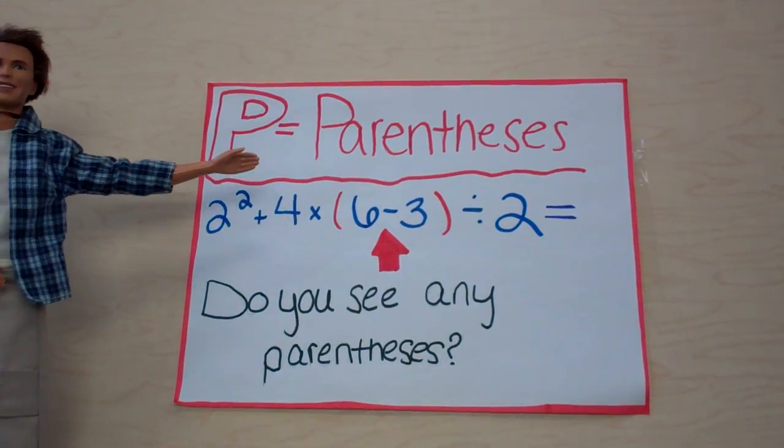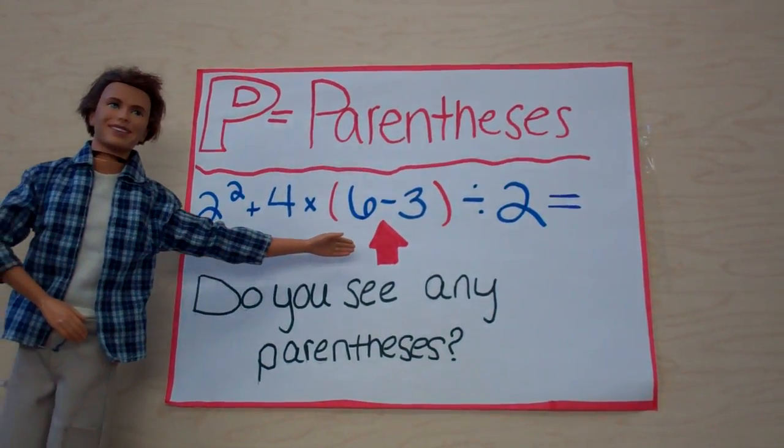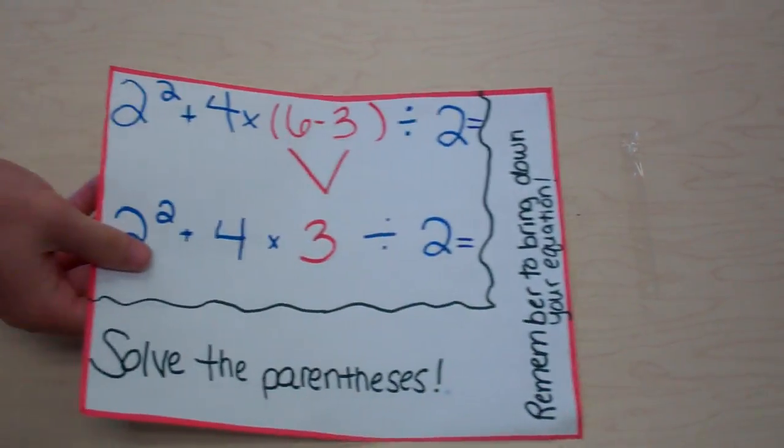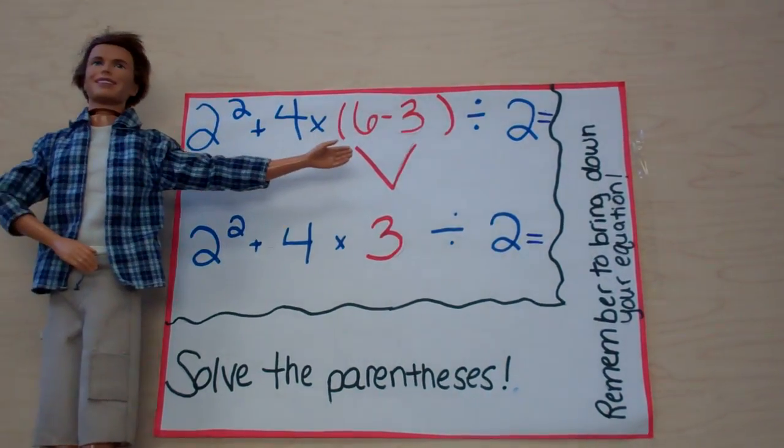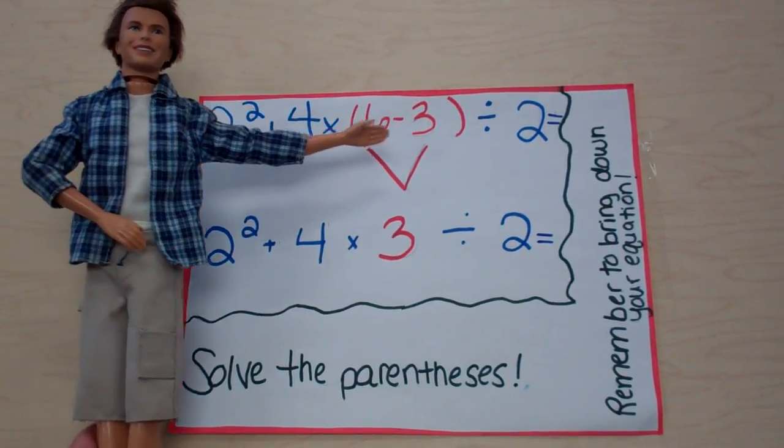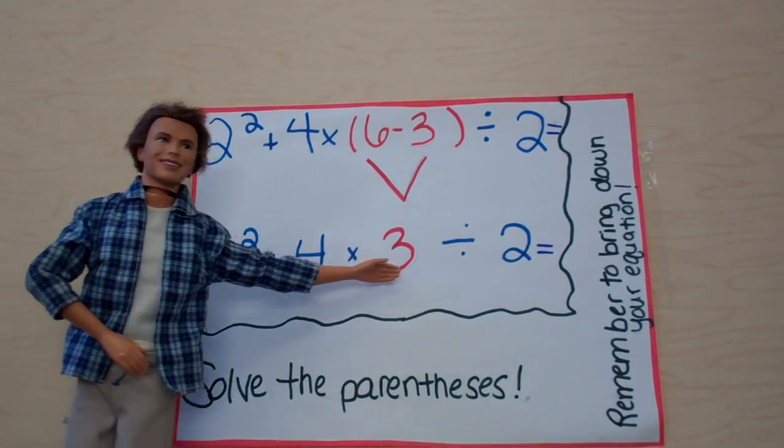P is for parentheses. Do you see any parentheses? Solve the parentheses. 6 minus 3 is 3. Remember to bring down your equation.